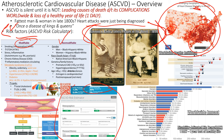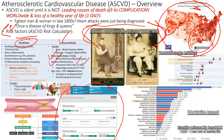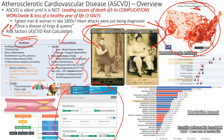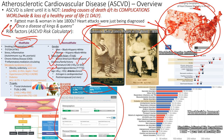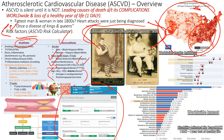Non-modifiable risk factors include sex, certain ethnicities, and genetics. If a parent had coronary artery disease or an MI before age 55 (father) or 65 (mother), that puts you at higher risk. Hypertriglyceridemia can be genetic. Arteriosclerosis — arterial stiffening — also increases with age and cannot be modified.